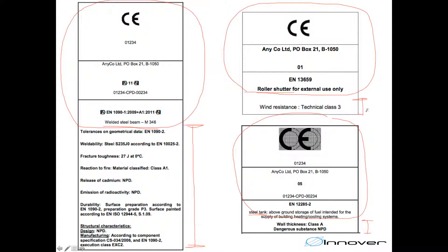Each and every single CE marking for construction products looks something like this. At the bottom we have the identifying information of the manufacturer and the product, and then we have a list of characteristics and nothing more.